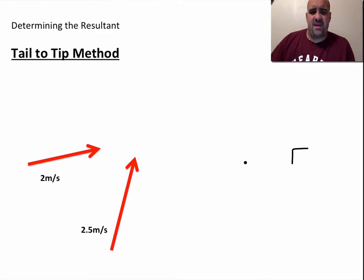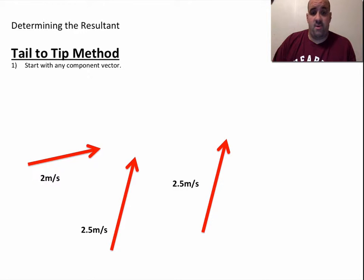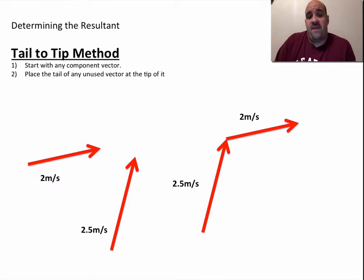One more example of the tail-to-tip method. You simply start with any component vector. We started with that one. We could have started with the other. You place the tail of the other vector at the tip of it, and now you're going to draw in your resultant. You're going to connect the two vectors.